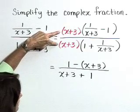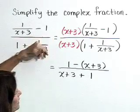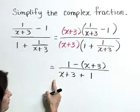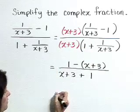So in multiplying the top and bottom by x plus 3, we've gotten rid of the complexity of the problem. We've gotten rid of the minor fractions within.